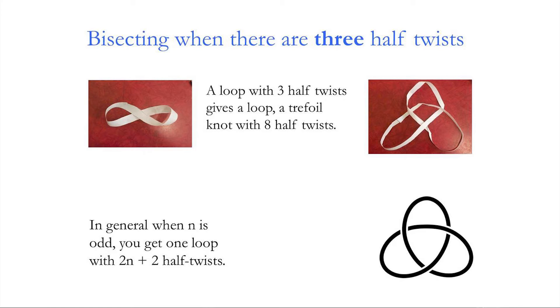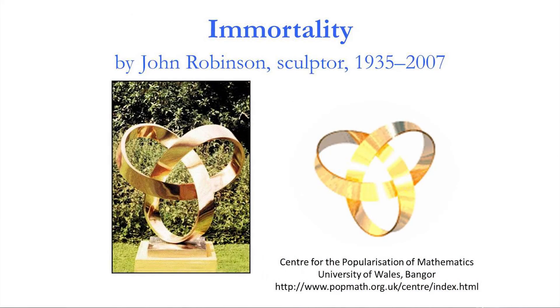Here is the trefoil knot. In general, when n is odd you get one loop with 2n+2 half-twists, which can be shown by an induction argument on the cutting argument. This is illustrated by a sculpture by John Robinson called 'Immortality' — if you take a Möbius band with three half-twists and cut it along the centre, you obtain one of these knots.